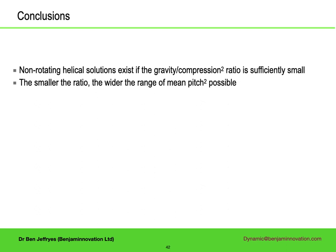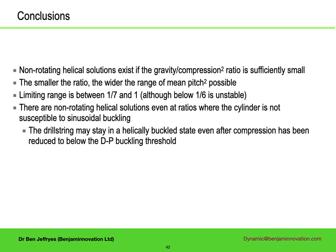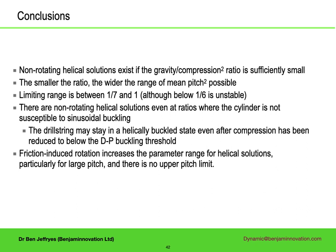Unfortunately, there is no complete story here, but I hope, quite a lot of illumination. So long as the gravity over compression squared ratio is sufficiently small, helical, non-rotating solutions exist in horizontal holes. The smaller the ratio, i.e., the larger the compression, the wider the range of mean pitch squared that is possible. The mean pitch squared limits are between 1 seventh and 1, although below 1 sixth is unstable. There are non-rotating helical solutions, even at gravity over compression squared ratios where the pipe is not susceptible to sinusoidal buckling, implying that it can stay in this state even after the compression has gone below the Dawson-Paisley threshold. Friction-induced rotation enables a wider range of helical solutions, particularly for large pitch. Numerical simulations do tend to show an earlier jump to helical buckling as the rotation speed increases.